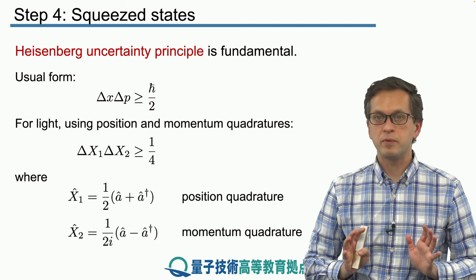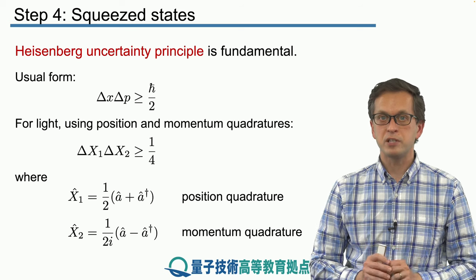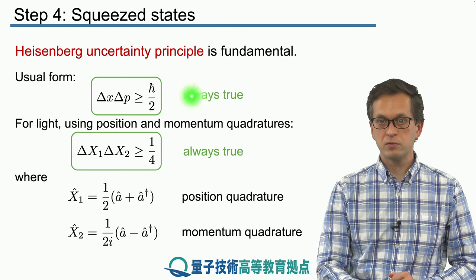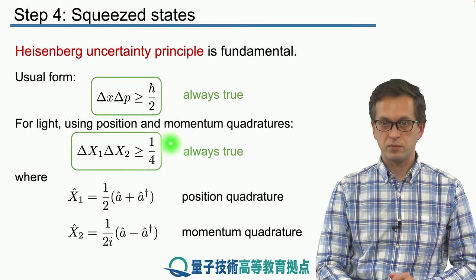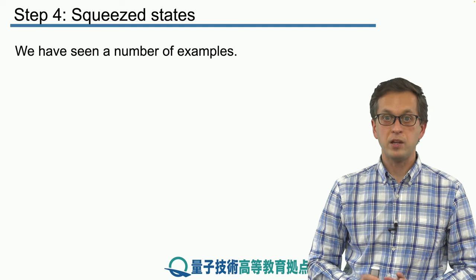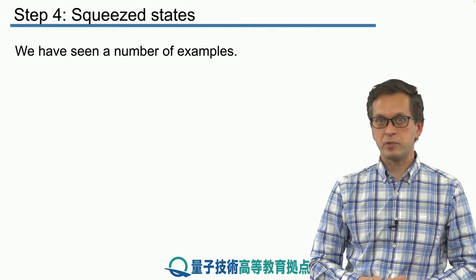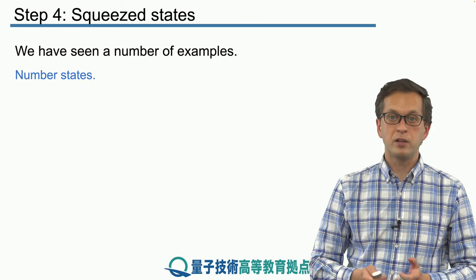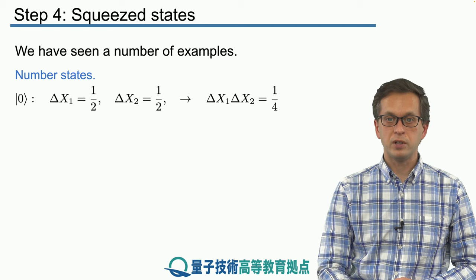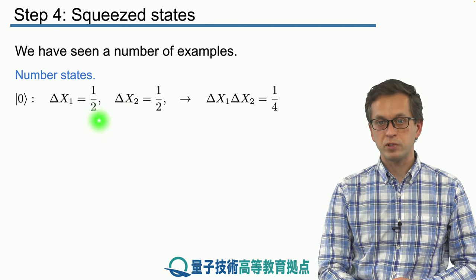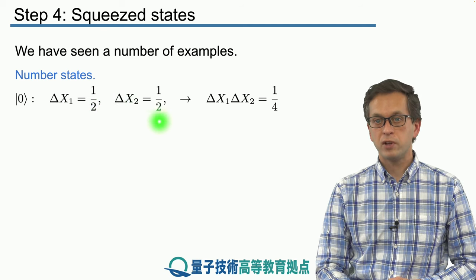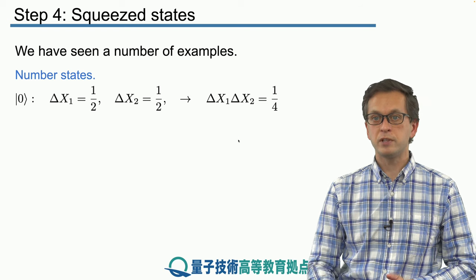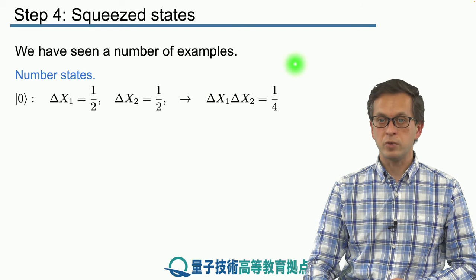The Heisenberg uncertainty principle is fundamental — it must always be obeyed. This is always true for any quantum state of light. We have seen many examples where we computed the fluctuations. For example, in vacuum the fluctuations in the position quadrature are equal to 1/2, and the fluctuations in the momentum quadrature are also given by 1/2. So the product is 1/4.